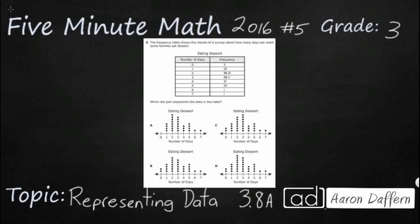You see we have a frequency table. They've already given us the title of this frequency table here, and if you look right here, you've got tallies. The only confusing thing here is these are the number of days — zero to seven — and they match what we see down in our answer selections. But we need to add just one more little column here and go ahead and put our total.